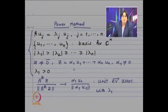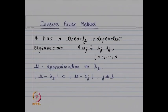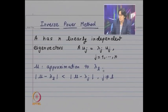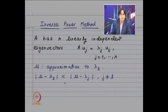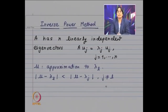This is the power method. Now we want to look at an extension of this method which will allow us to find the eigenvector associated with an intermediate eigenvalue. Our assumption is that A has n linearly independent eigenvectors: A u_j = lambda_j u_j for j = 1 to n, and mu is given as an approximation to lambda_l — some l-th eigenvalue that need not be the largest or the least in modulus. Since mu is an approximation to lambda_l, its distance from lambda_l is smaller than its distance from the remaining eigenvalues: |mu - lambda_l| < |mu - lambda_j| for j not equal to l.